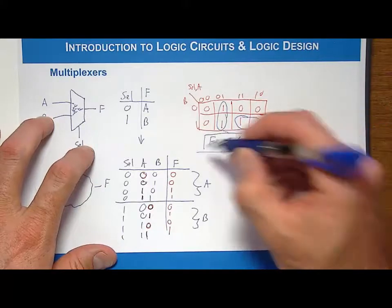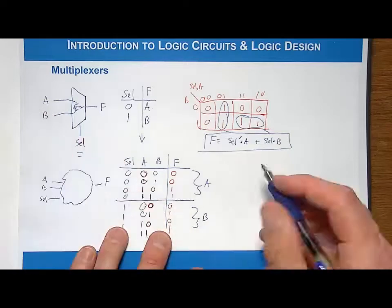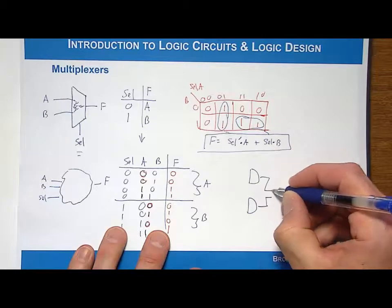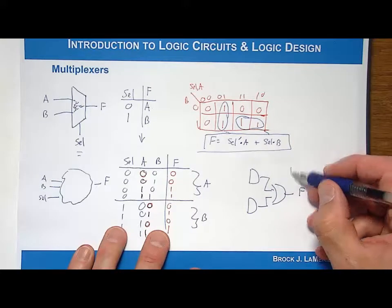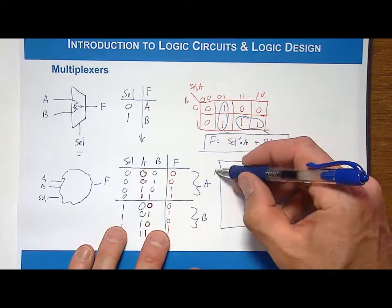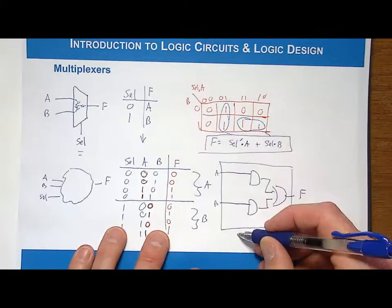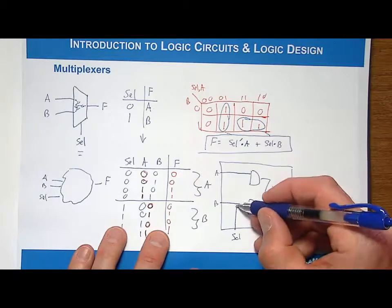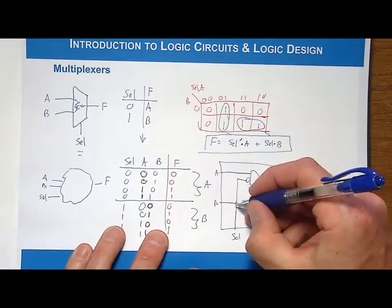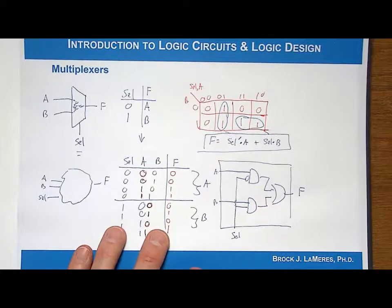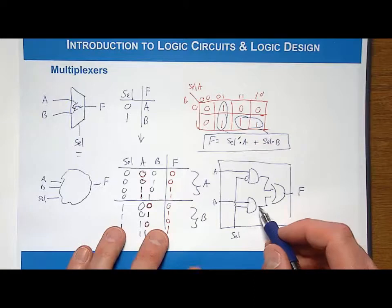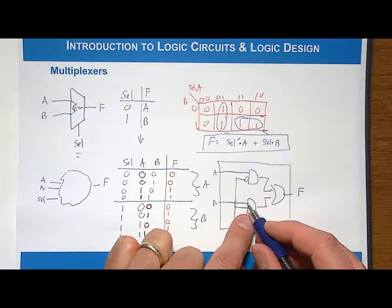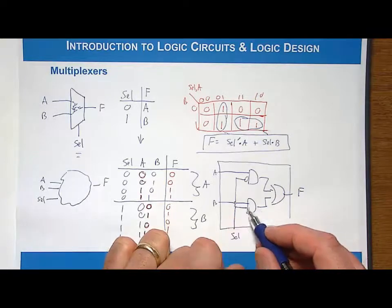Drawing the logic diagram in the same form with A and B on the left and select from the bottom, the output is a sum of products — two product terms through an OR gate. A comes into the first AND gate, B comes into the second, and select goes into the second AND gate uncomplemented and into the first AND gate with an inversion bubble. If select is 1, whatever B is will pass through that AND gate to the output.